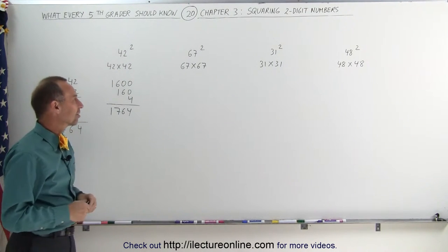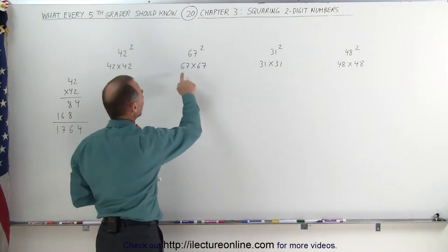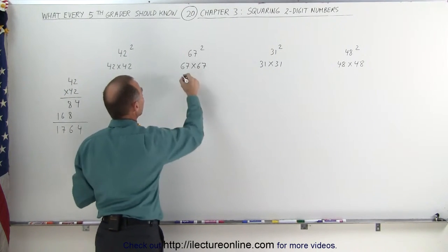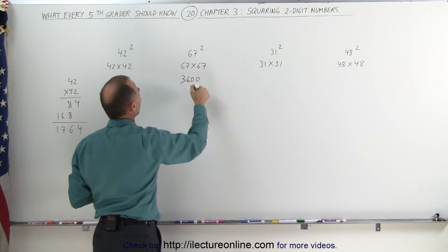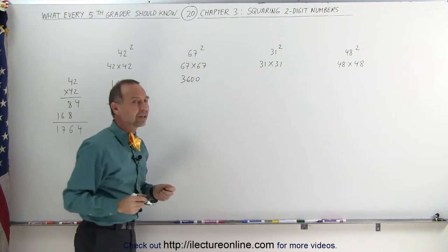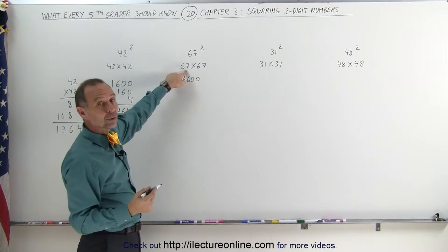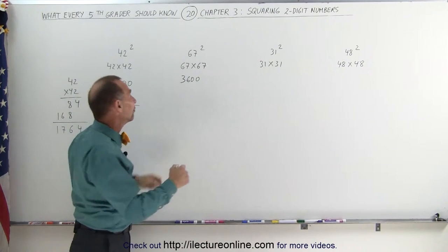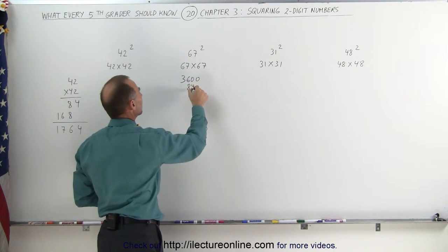Let's try that technique with something like 67. First, you multiply the first two numbers together, 6 times 6 is 36, add two zeros, you get 3,600. Now you multiply these two numbers together. 6 times 7 is 42, add a zero is 420. Now you double that, double 420, you get 840. Then you add that here.